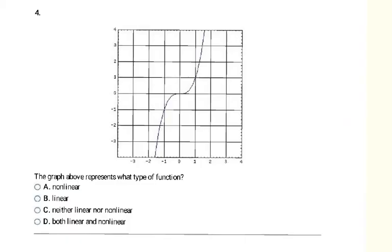In this next example, it's a graph again, but this time instead of a set of points, there is a line already drawn. Is that line straight or curved? It's curved, so my answer is nonlinear. If it were straight, it would be linear — but since it's curved, the answer is nonlinear.